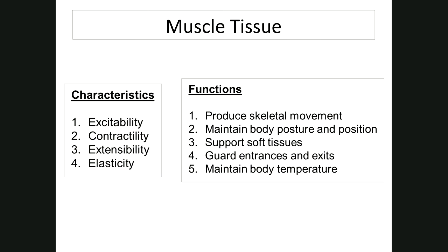Number four, guard entrances and exits. Circular muscles called sphincters are found throughout your body — they control the movement of substances. Your eyes have the orbicularis oculi for blinking, your mouth can open wide or constrict to suck on a straw. The pyloric sphincter at the base of your stomach opens periodically to allow stomach contents into your small intestine.